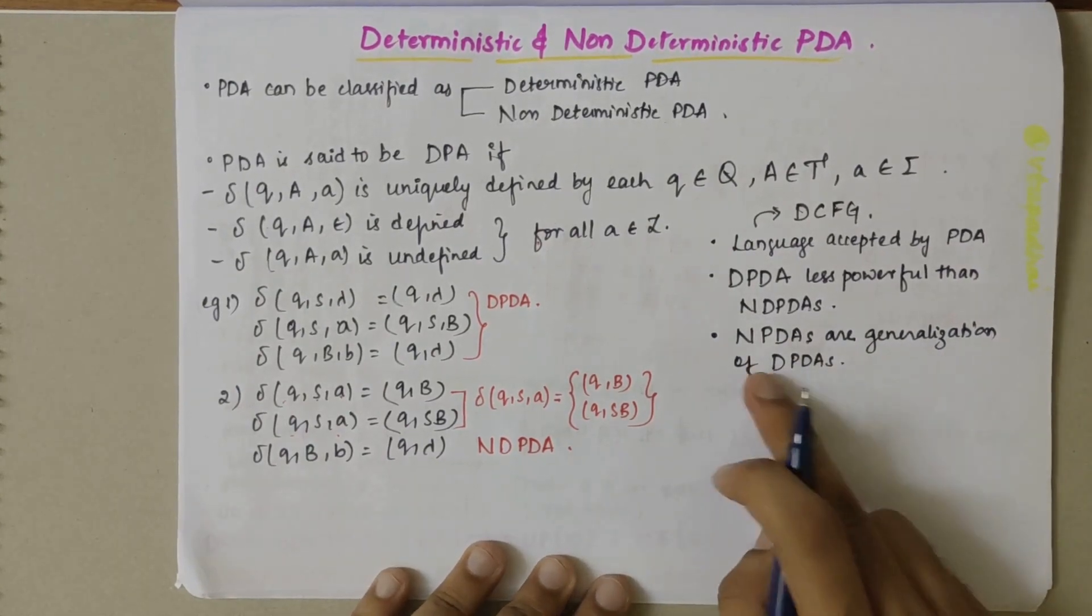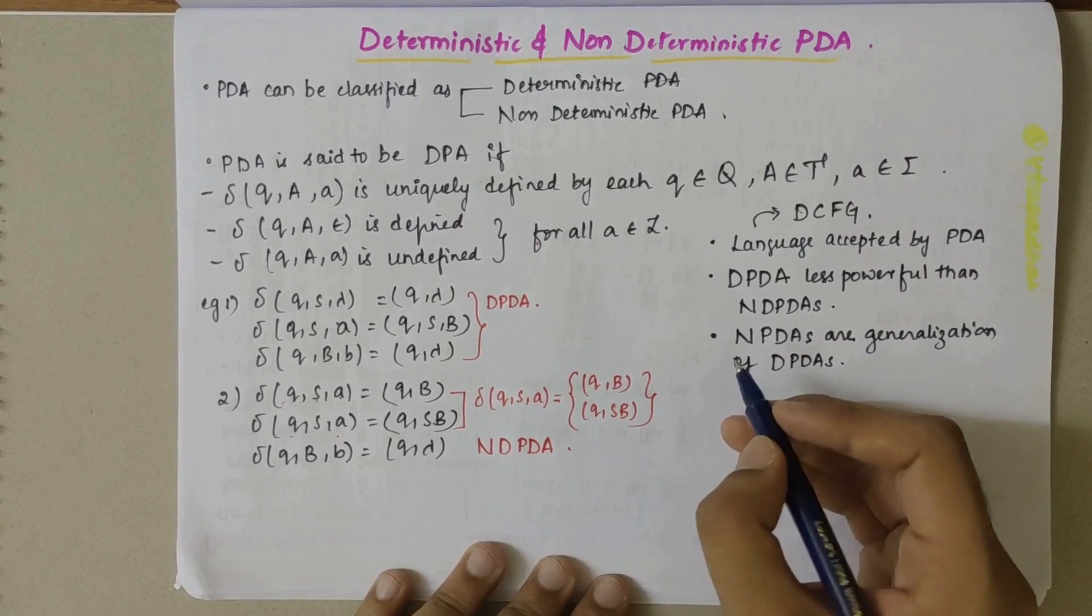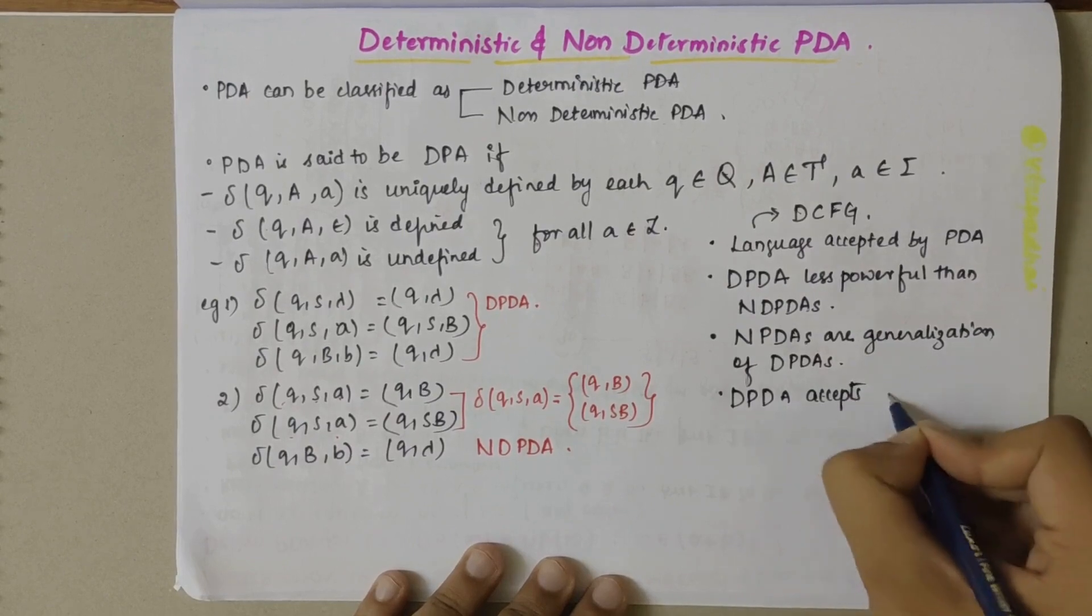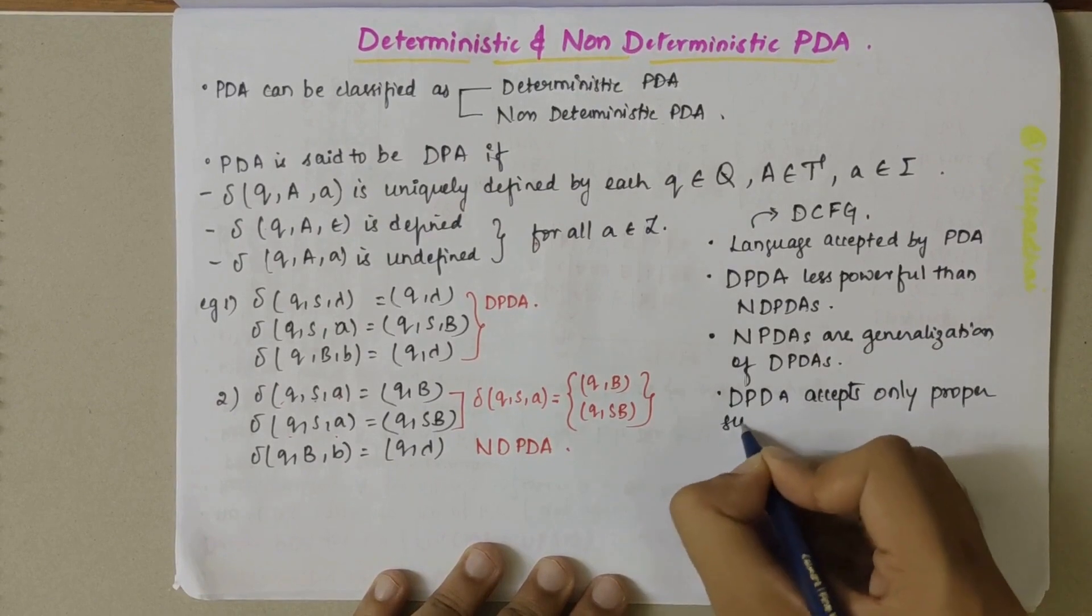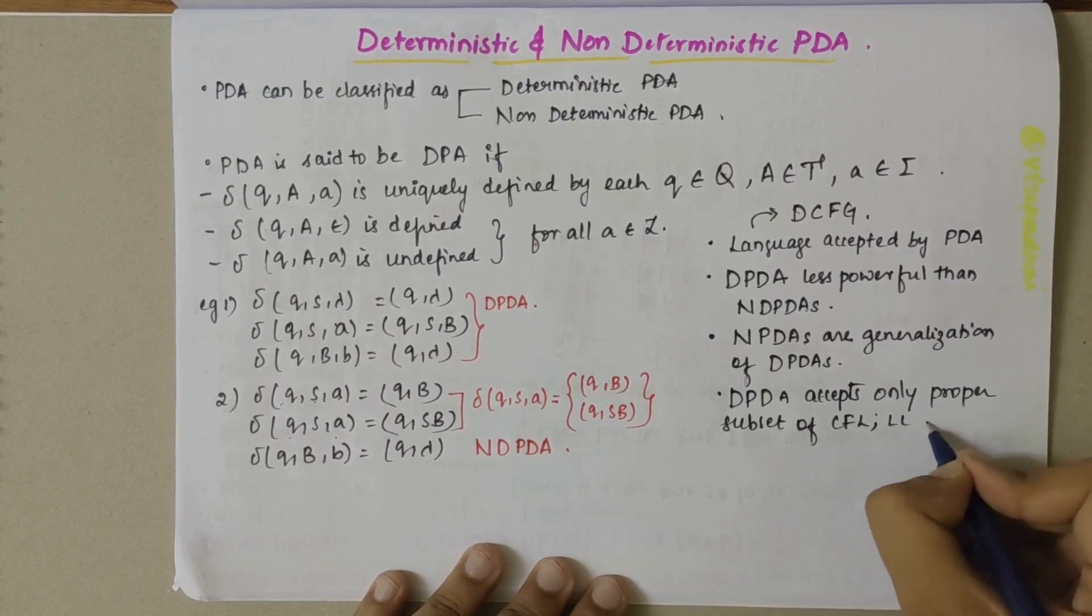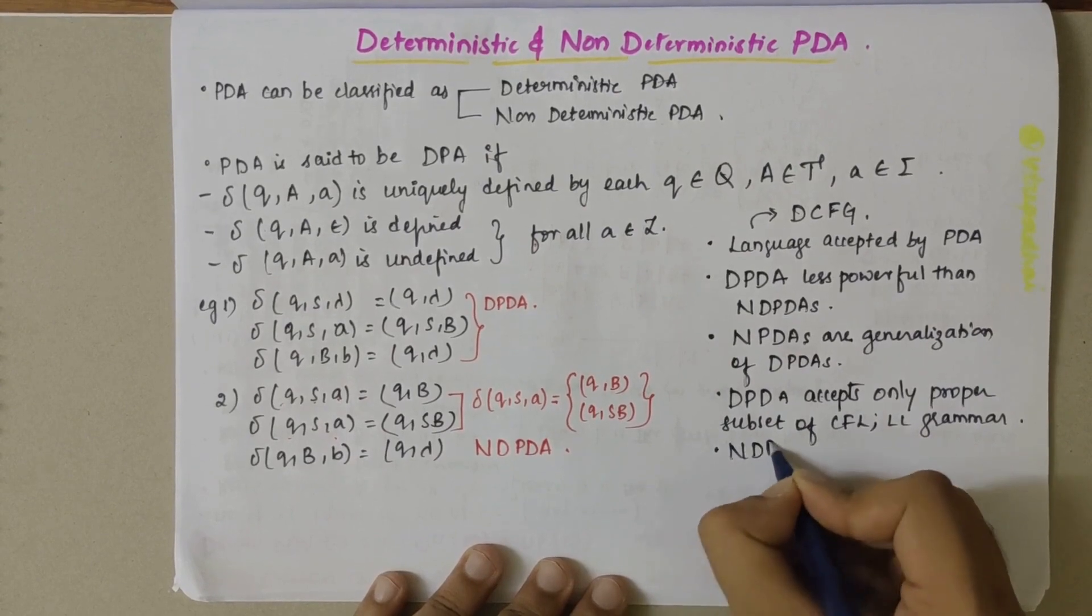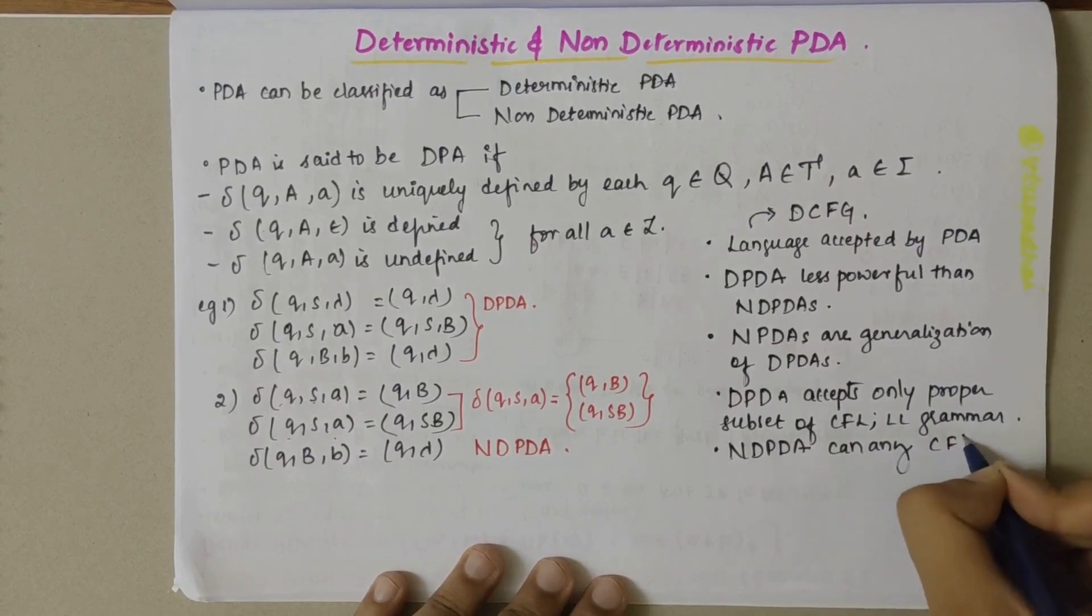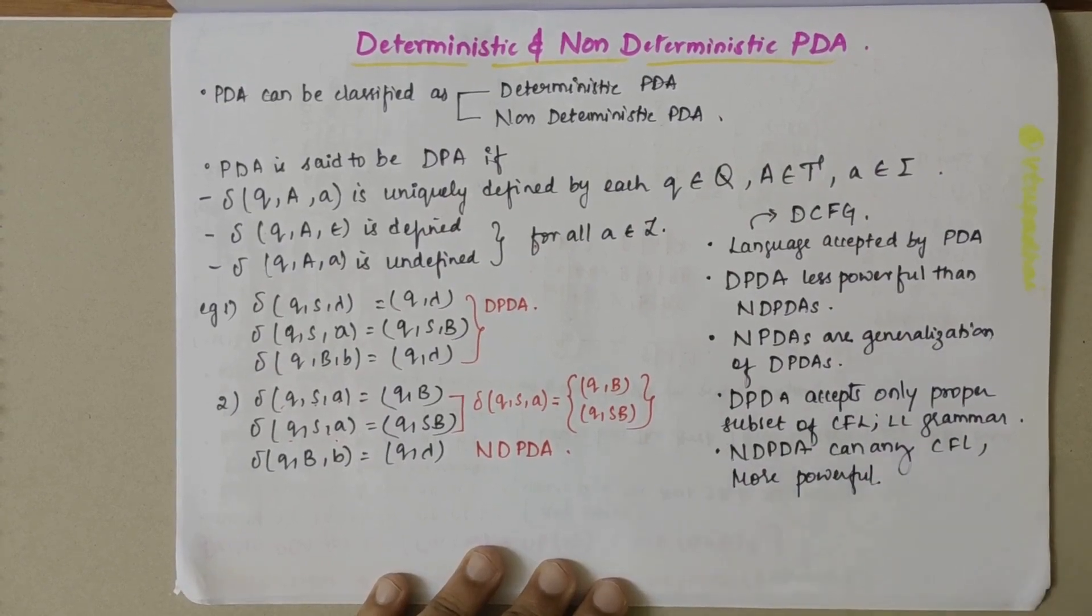That is every deterministic PDA can be simulated by non-deterministic PDA but it is not the same in vice versa condition. Here deterministic PDA accepts only proper subset of context-free language, that is LL grammar, but when we talk about non-deterministic PDA it can accept any context-free language, so it is more powerful.